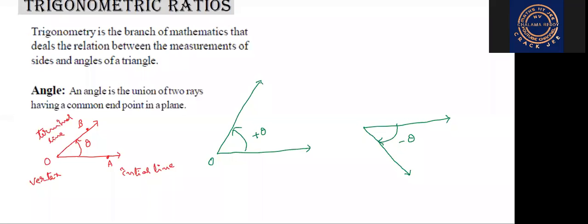So this is the horizontal line OA. This is OB. Here OA is the initial line and OB is the terminal line. This is the anti-clockwise direction and this is the clockwise direction. So when we get a positive angle and when we get a negative angle — students, are you understood now?